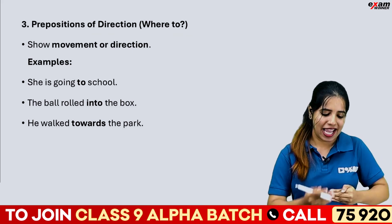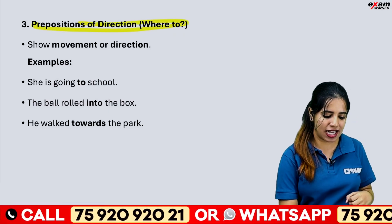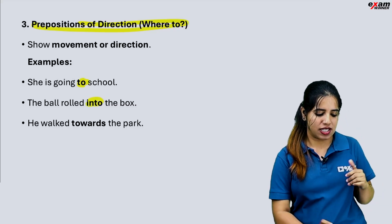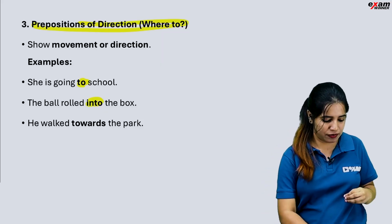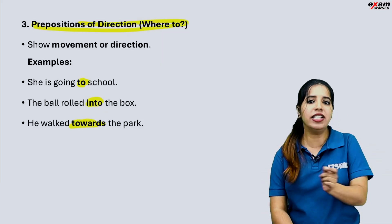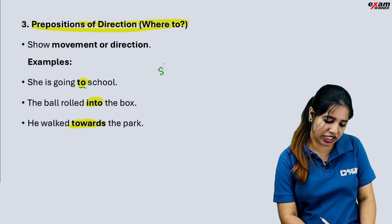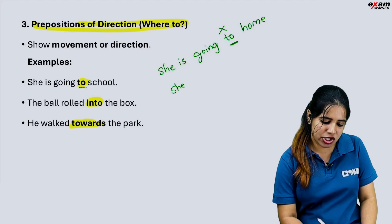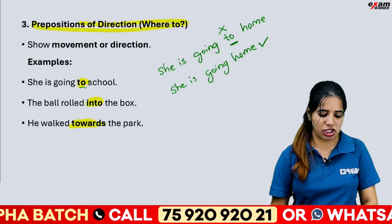Prepositions of direction — we use these when there is movement. For example: 'She is going to school.' 'The ball rolled into the box.' 'He walked towards the park, towards the museum.' Also: 'She is going home' — here we do not use 'to', that is one of them in direction.